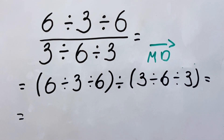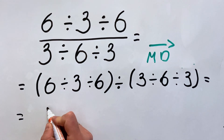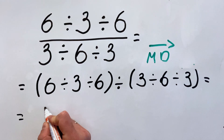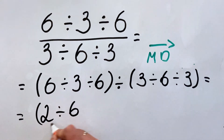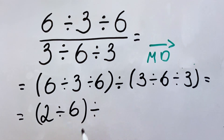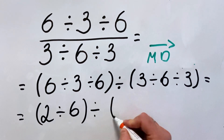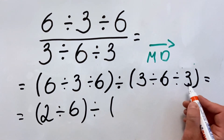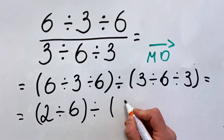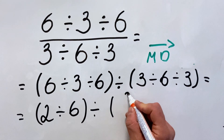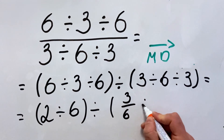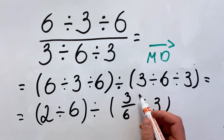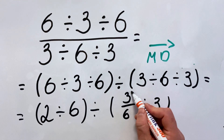So what do we get? We have 6 divided by 3, which gives us 2. Then we have 6 divided by 3, which gives us 2 as well — let's write it like this. And here we will simplify by 3 later.